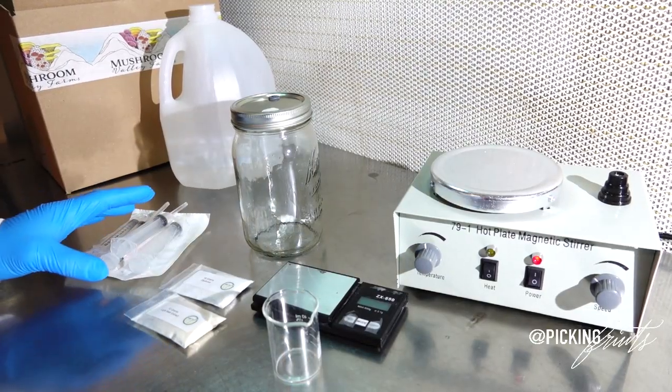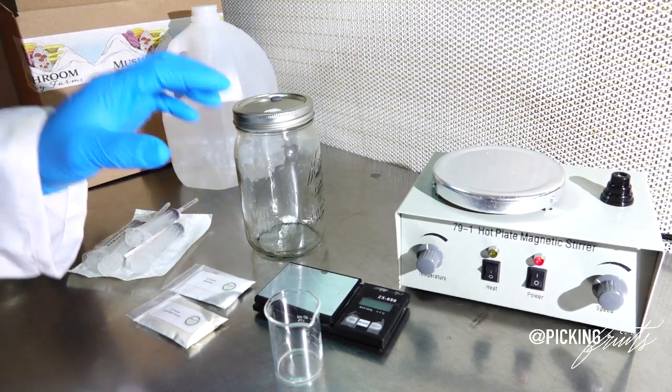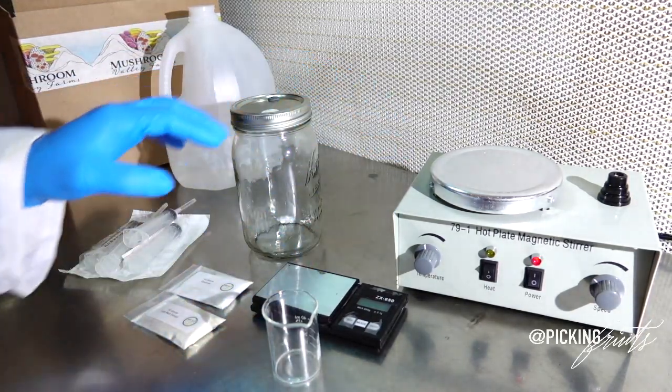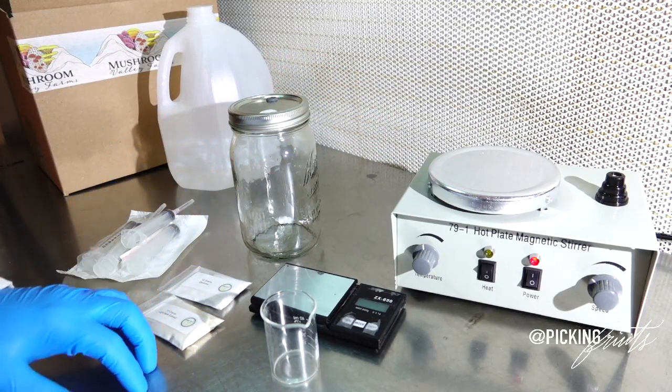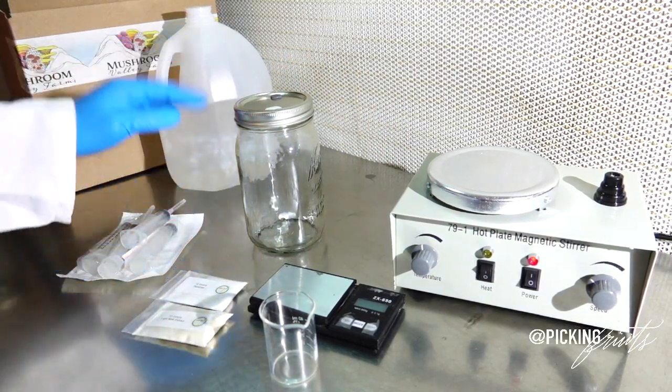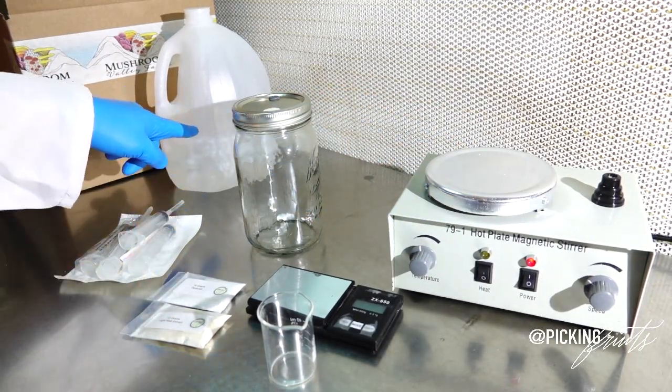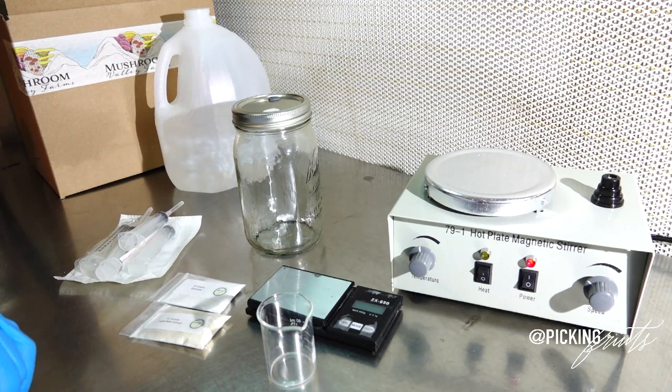Alright friends, so now we're actually going to be making the liquid culture. And one of the things that I really enjoy about this kit is that everything is in one place. So everything has already been sourced for you. All the hard work has already been done. You get the vessel, you get the nutrients, you get the syringes, you get the luer locks, you get the stir plate. The only things that you have to provide are water and the scale to measure your nutrients.